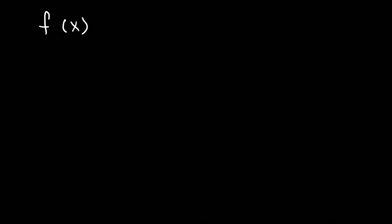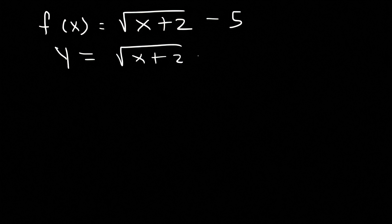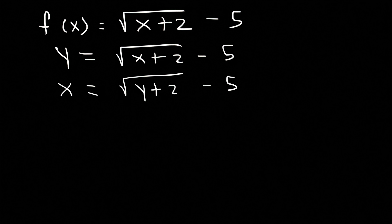Now let's work on another example. Find the inverse function of the square root of x plus 2 minus 5. Go ahead and pause the video and try this problem. So let's start with the same process — let's replace f of x with y. Next, switch x with y. The steps are going to be the same. So we're going to have x is equal to the square root of y plus 2 minus 5.